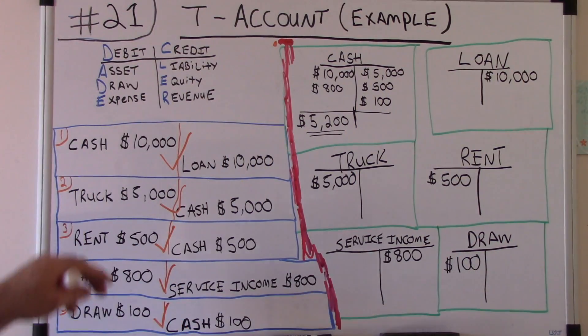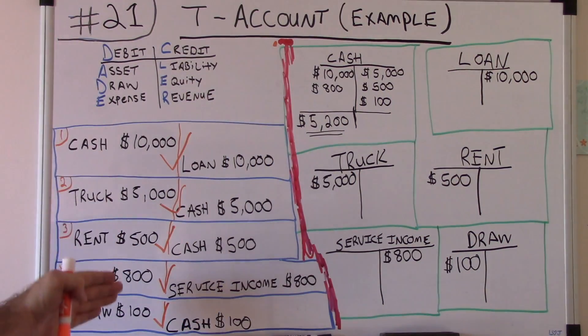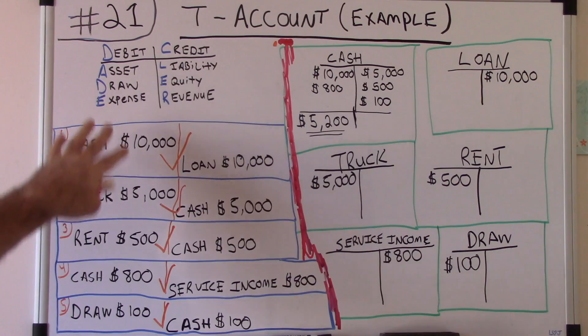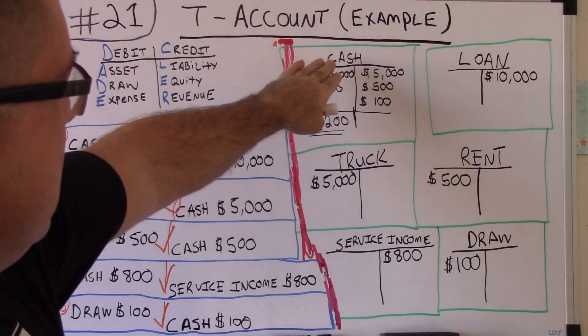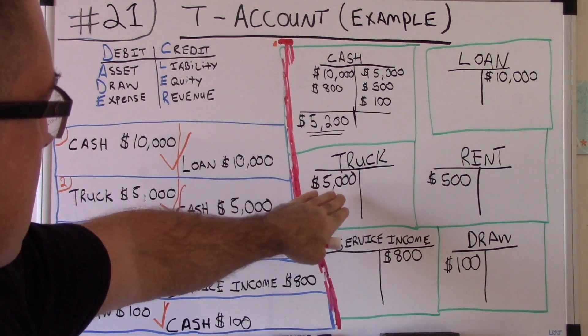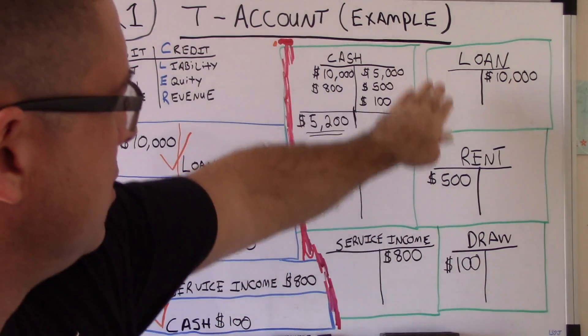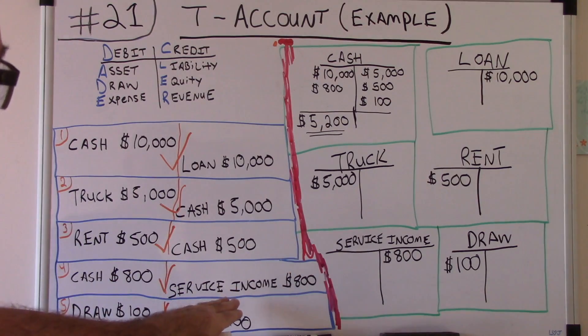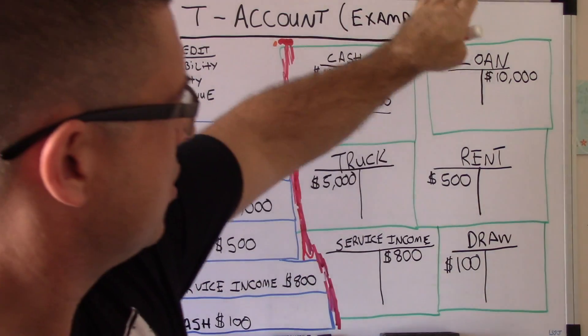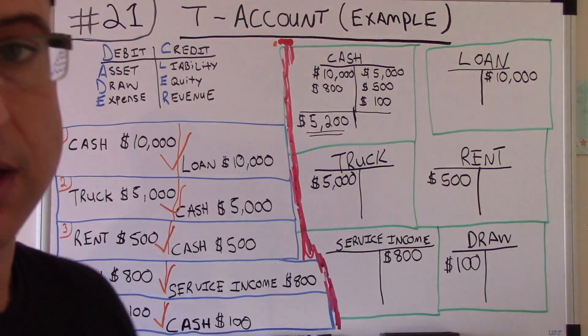We've just taken whatever is a debit in our journal entry and put it on the debit side of the t-account, and whatever is a credit in our journal entry goes on the credit side.